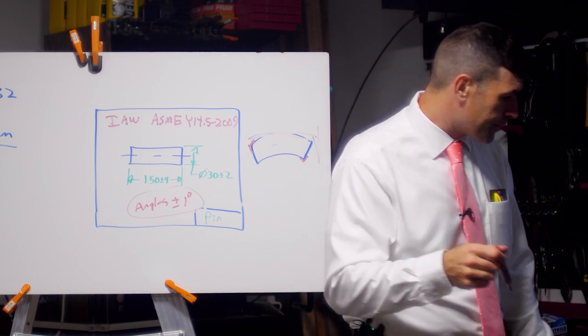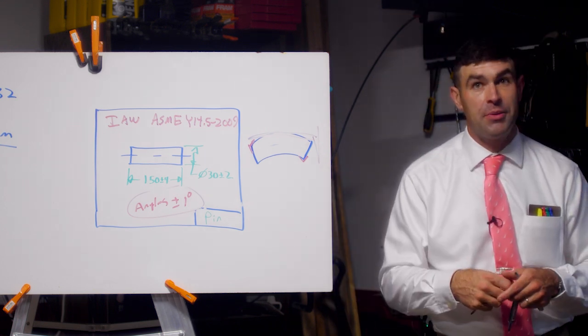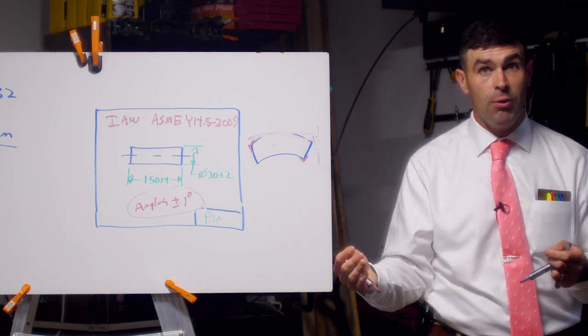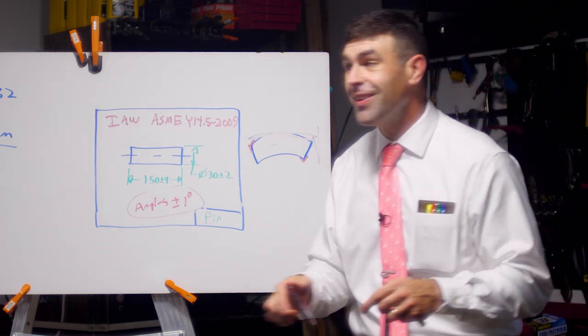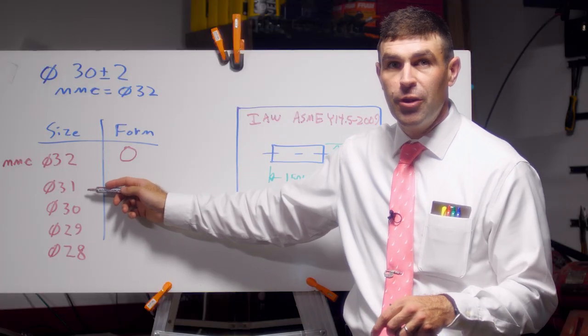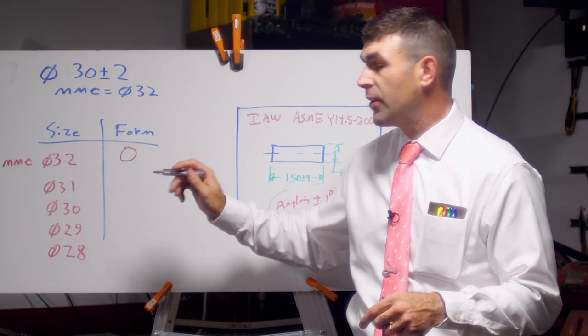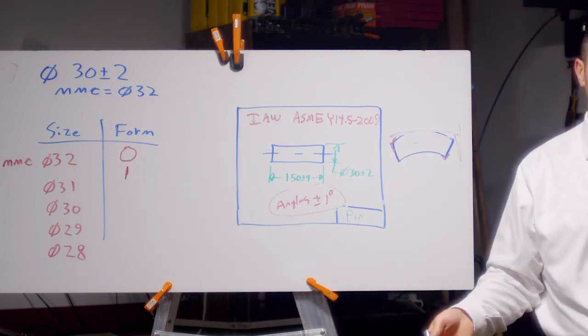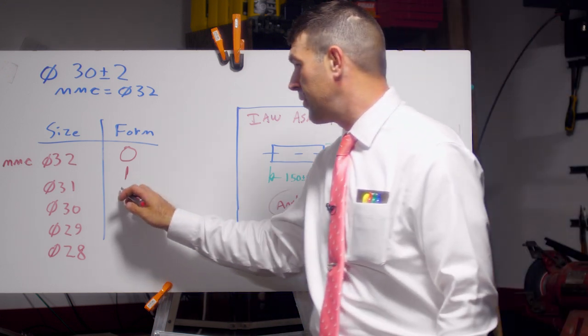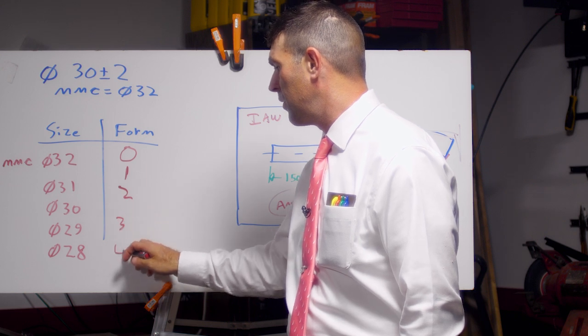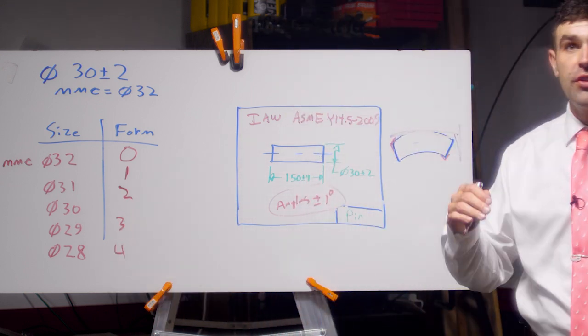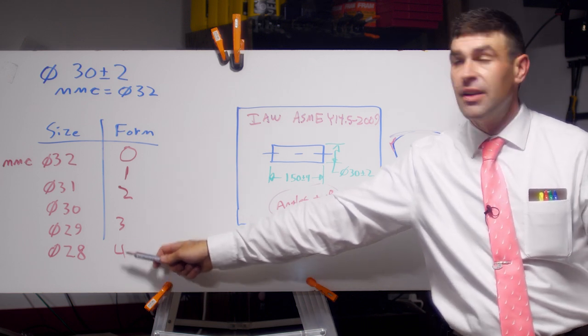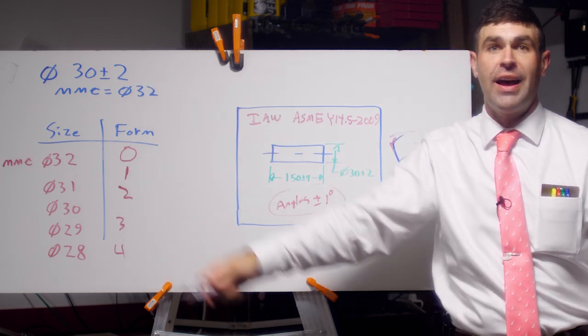Now, I'll explain how we check it in a minute, but perfect cylinder. Now, when the feature departs from the maximum material condition, we're going to get form tolerance equal to that difference. So on the chart, if we come in one millimeter smaller than the maximum material condition, we get one millimeter of form variation. And we just keep going down. Two, three, four.